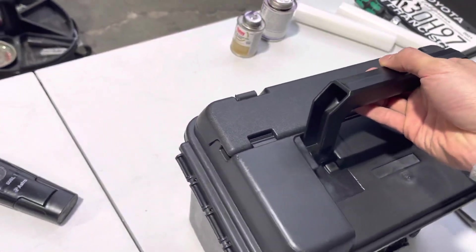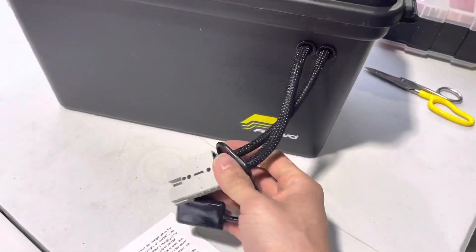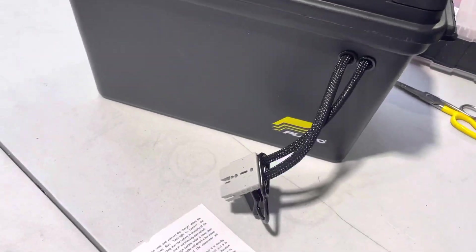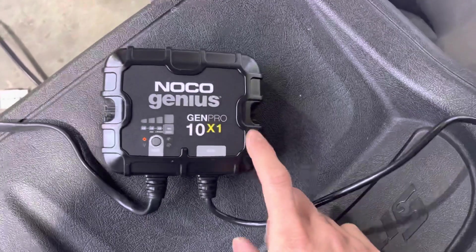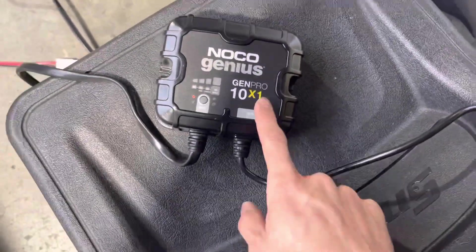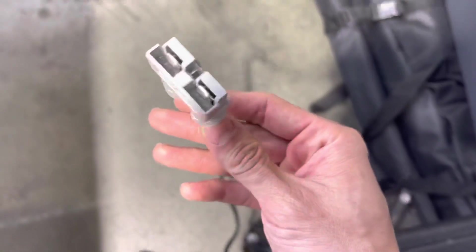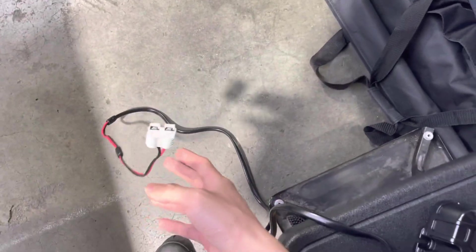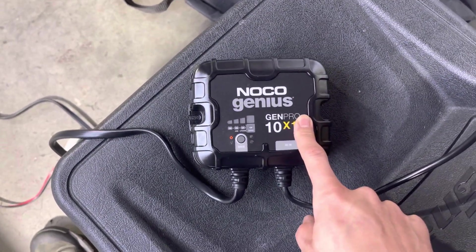Instead I said hey why don't I just use a regular battery. I hooked up a quick connect to the side and there's a bunch of them. I have this NOCO Genius Pro 10 amp charger, cut the ends off, I put a quick connect on this side.